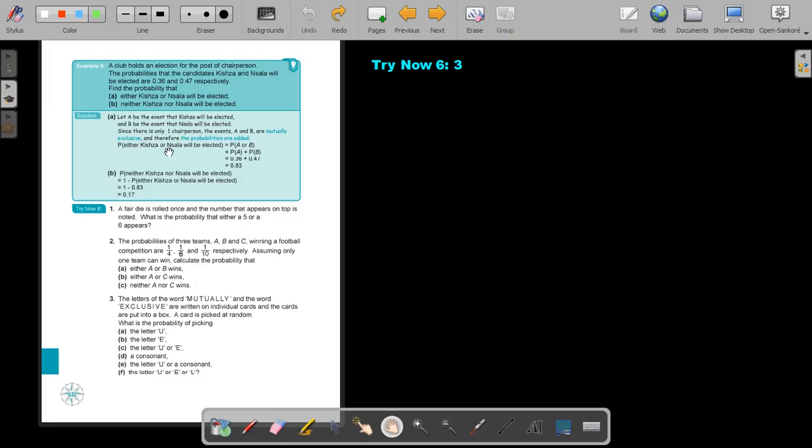So the probability, either Kisha or Nishala will be elected. So it's P(A or B). That will be P(A) plus P(B), and that will be adding up the two probabilities that will give you a result of 0.83. P, neither Kisha nor Nishala will be elected. So it's one. Can you remember it from single events? You take a certainty, a certainty is always one, and you subtract this outcome, which is 0.83. And then that will be 0.17.